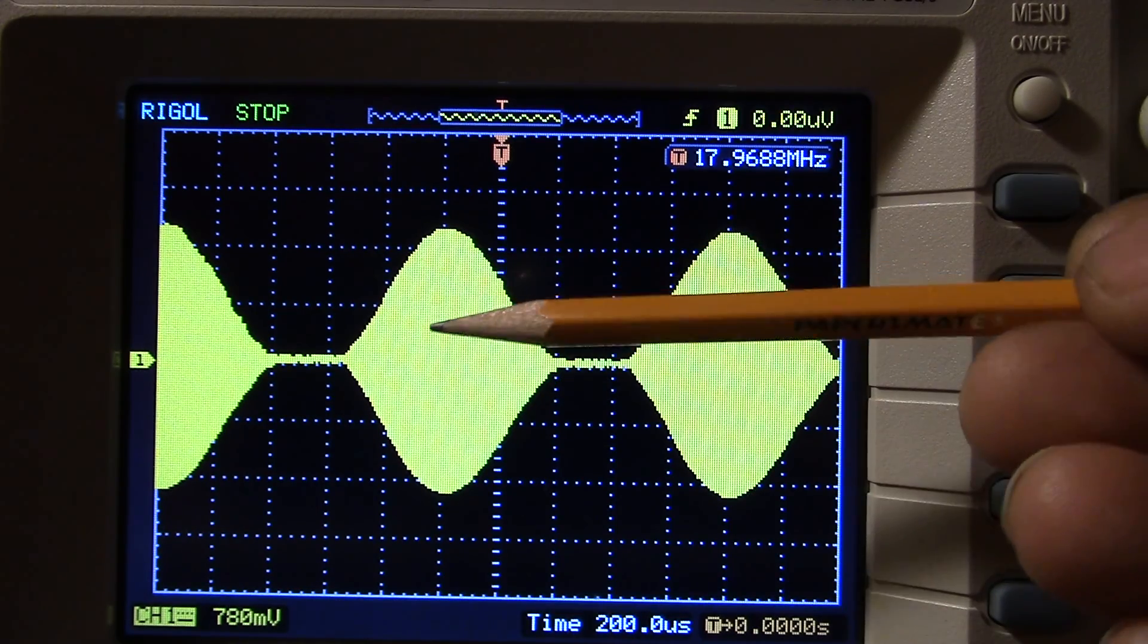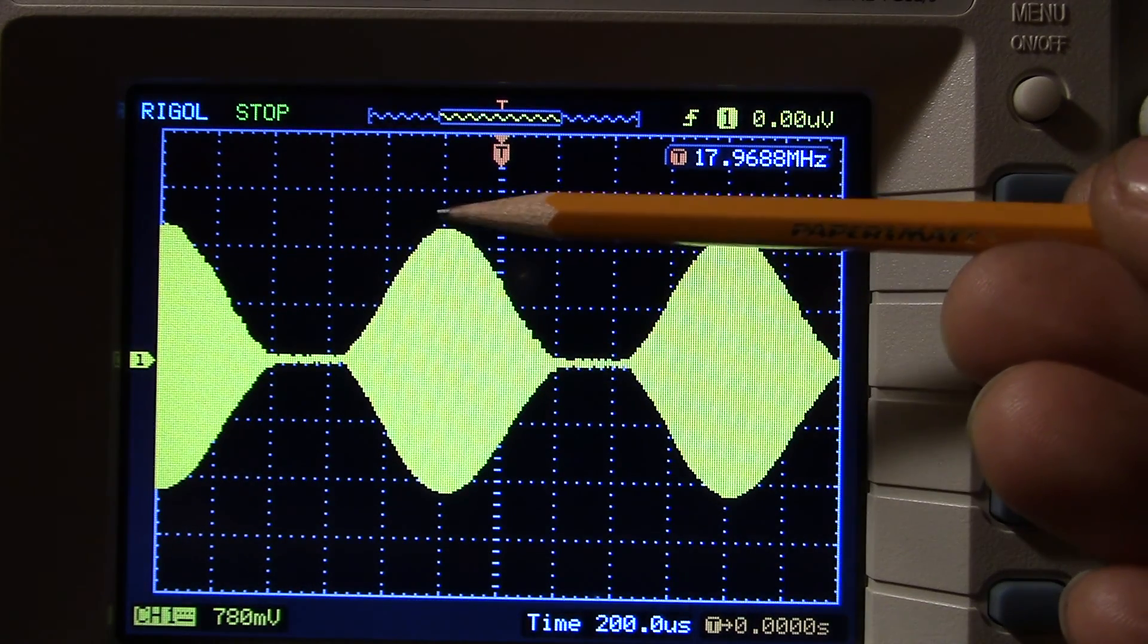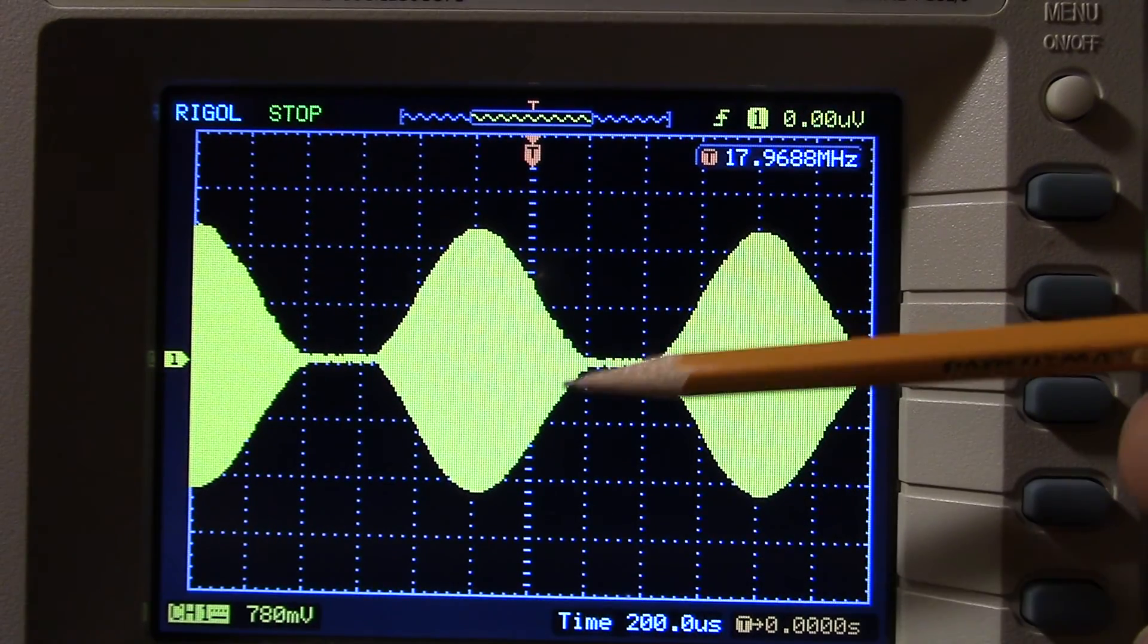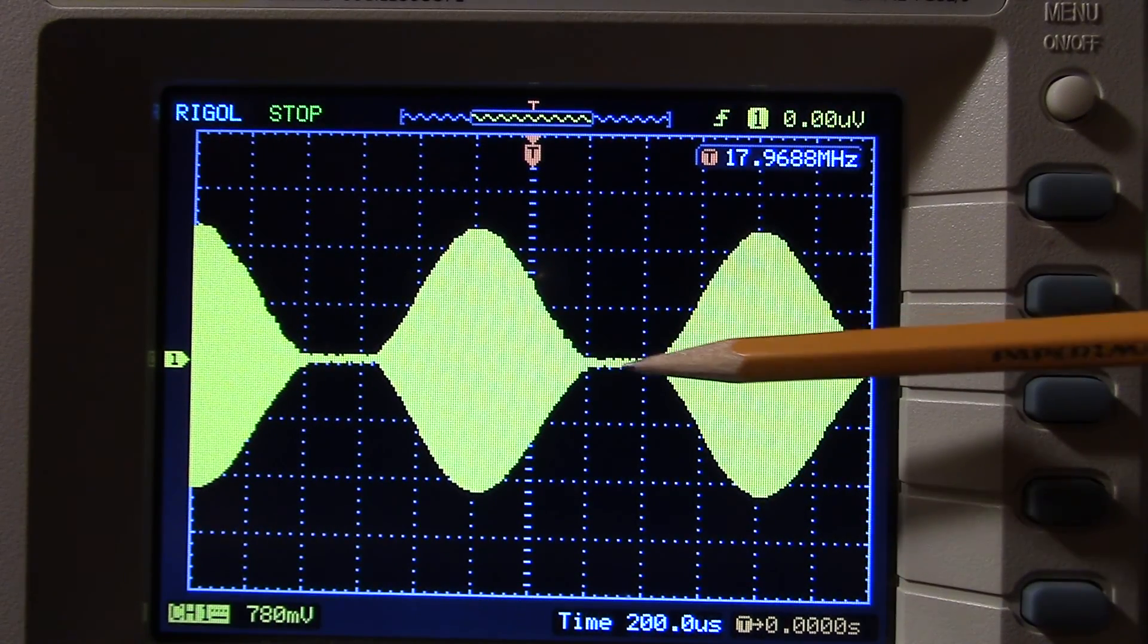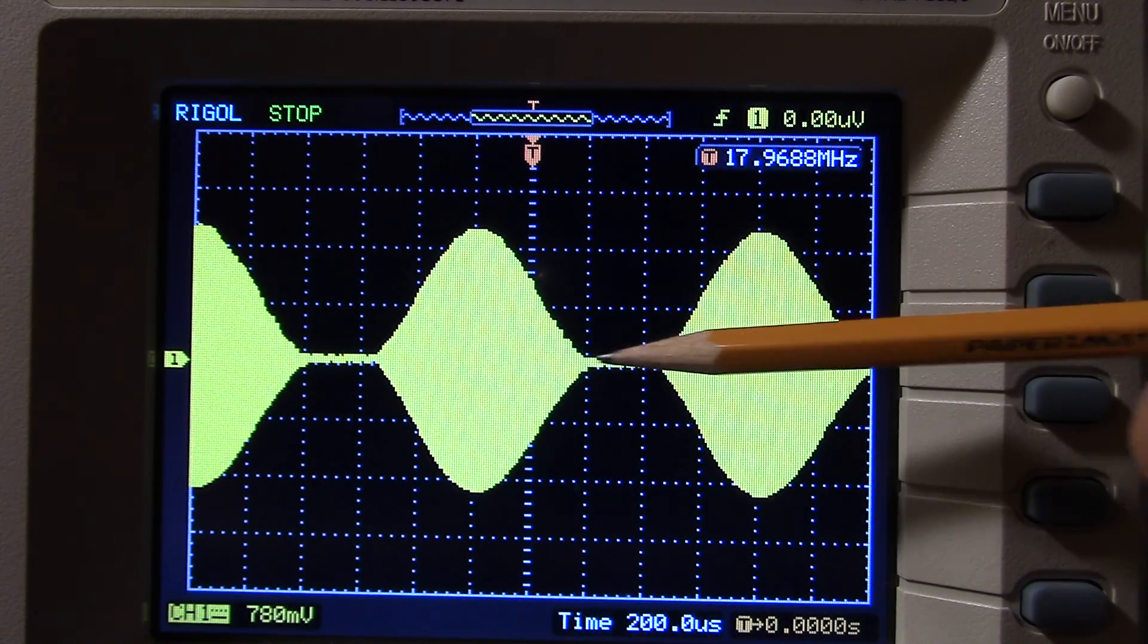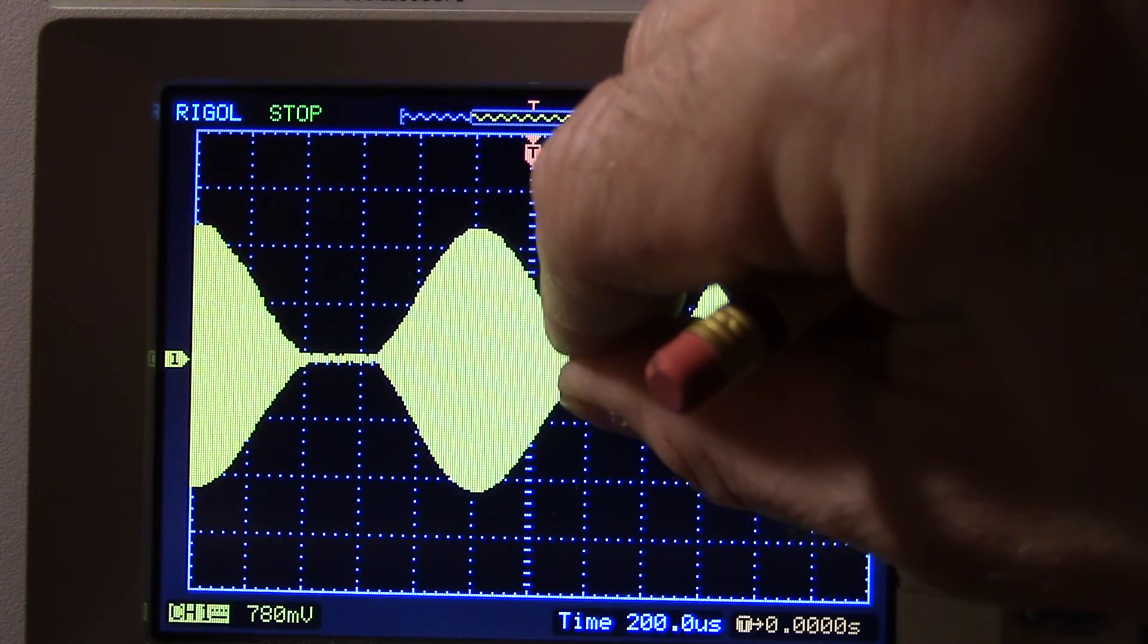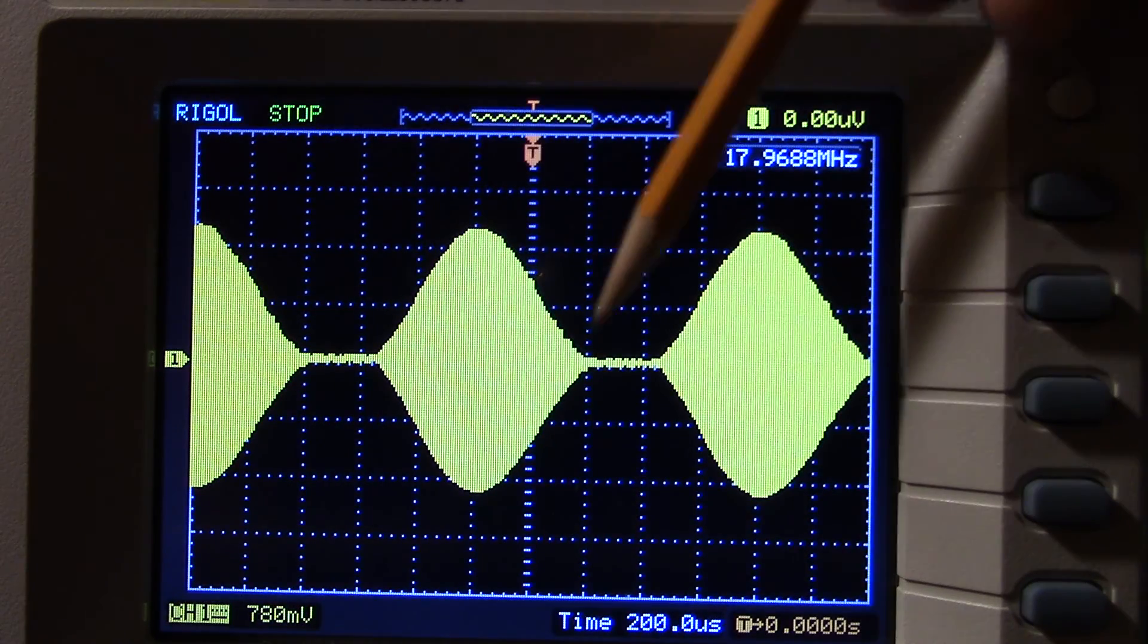You can see we went above 100% modulation here. But, we can't go any further down here. So, what happens is, it shuts off. This is no output. This is zero. It's squashed down. Or, we pinched that carrier. That right there is distortion.